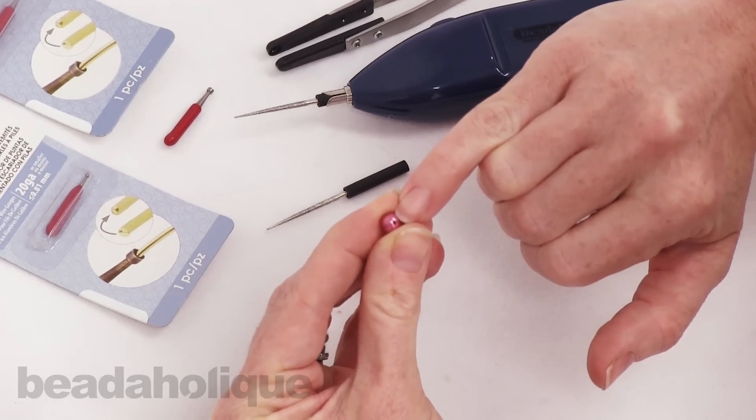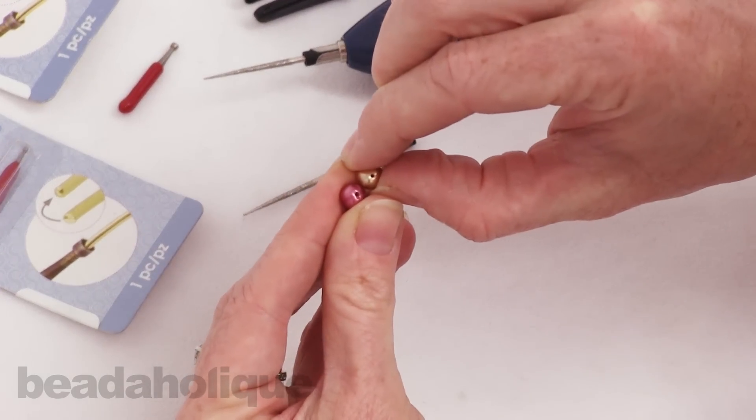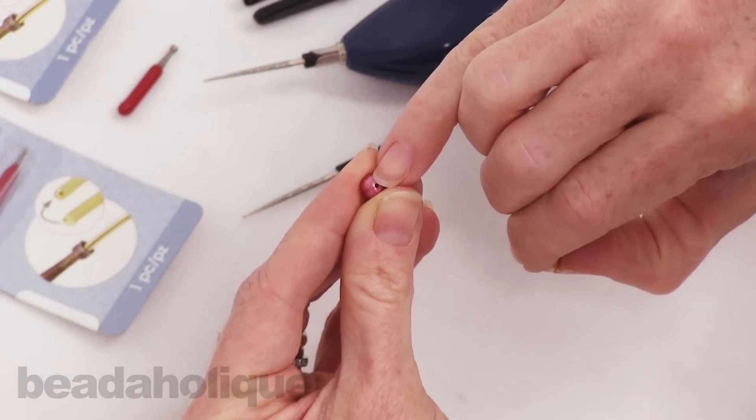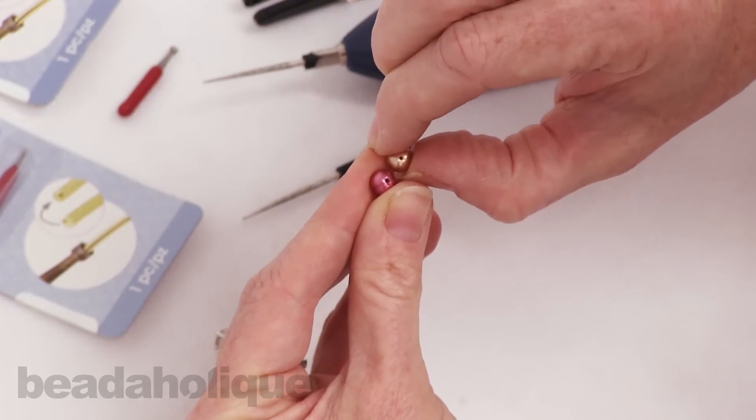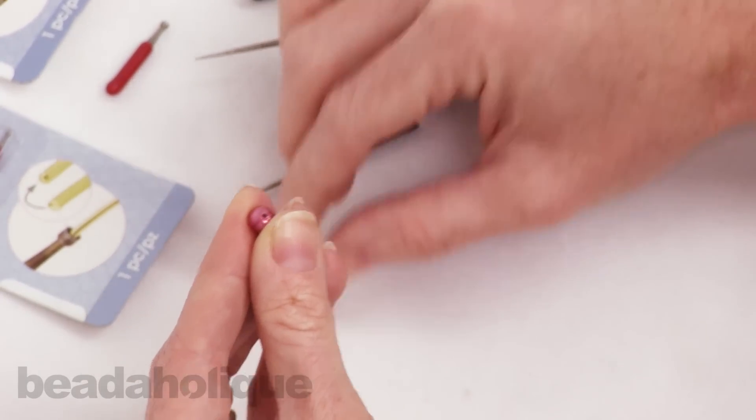So I have here where I've already used it on this pearl and you can compare it to the size of this hole here. Now if I would have kept going I could have made this hole even larger, but as you can see it is a bit larger than the original size. Let me teach you how to do that.